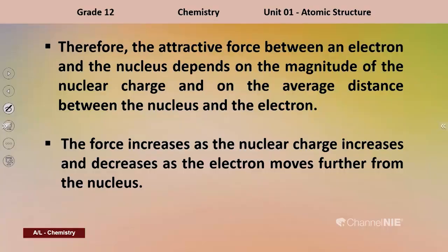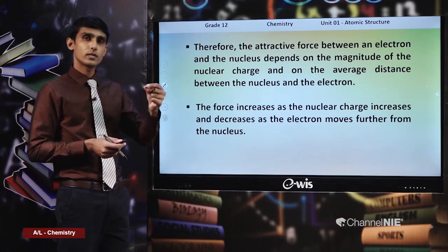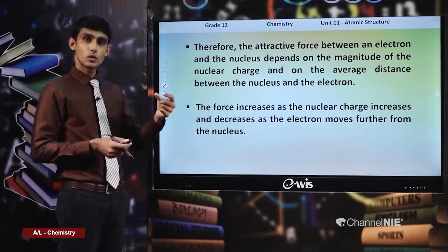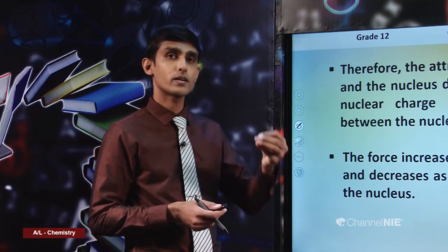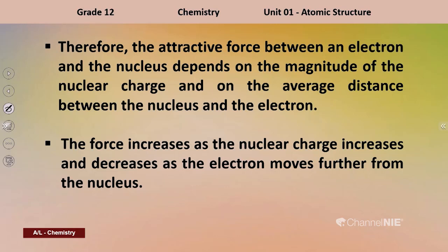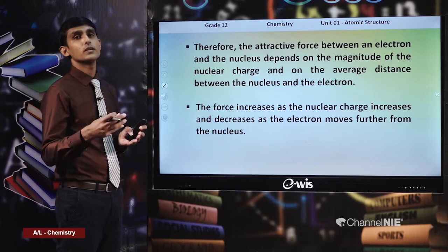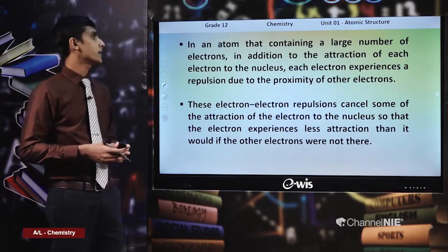The attractive force between an electron and the nucleus depends on the magnitude of the nuclear charge and on the average distance between the nucleus and that electron. When the nuclear charge — the number of protons — increases, the attraction between the electrons and the nucleus increases. The force increases as nuclear charge increases and decreases as the electron moves further from the nucleus.